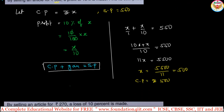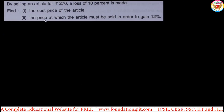In this problem: by selling an article for ₹270, a loss of 10 percent is made. The selling price and loss percentage are given. Find: first, the cost price of the article using the same algebraic method; and second, the price at which the article must be sold in order to gain 12 percent. Let cost price equal to rupees x.